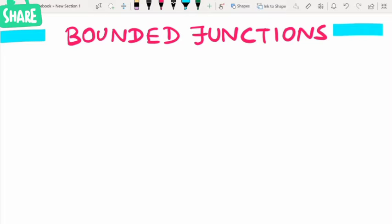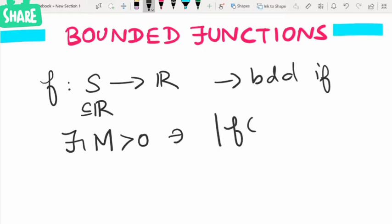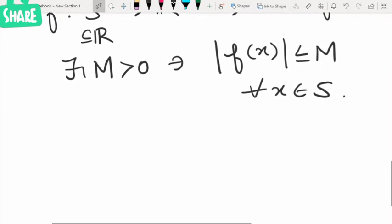Hello everyone, welcome to One-Star Mathematical Solutions. Today we are going to see about bounded functions. Consider a function f from S to R, where S is a subset of R. Then f is said to be bounded if there exists a number M greater than zero such that the modulus of f of x is less than or equal to M for all x in S.